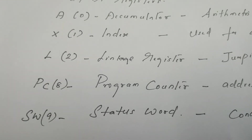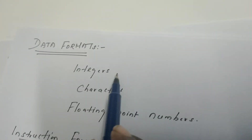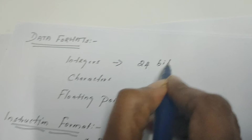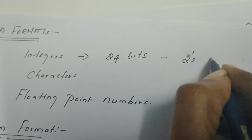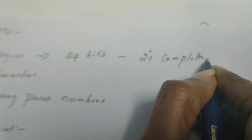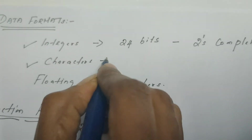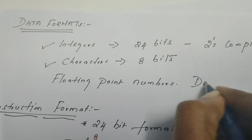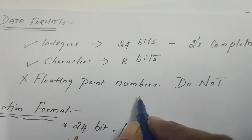Those are the five registers of SIC architecture: accumulator, index register, linkage register, program counter, and status word. SIC architecture supports the data type integer — to store integers we need one word or 24 bits, and negative numbers can be represented using 2's complement. It also supports the character data type, using 8 bits. SIC does not support floating point representation as there is no floating point hardware.